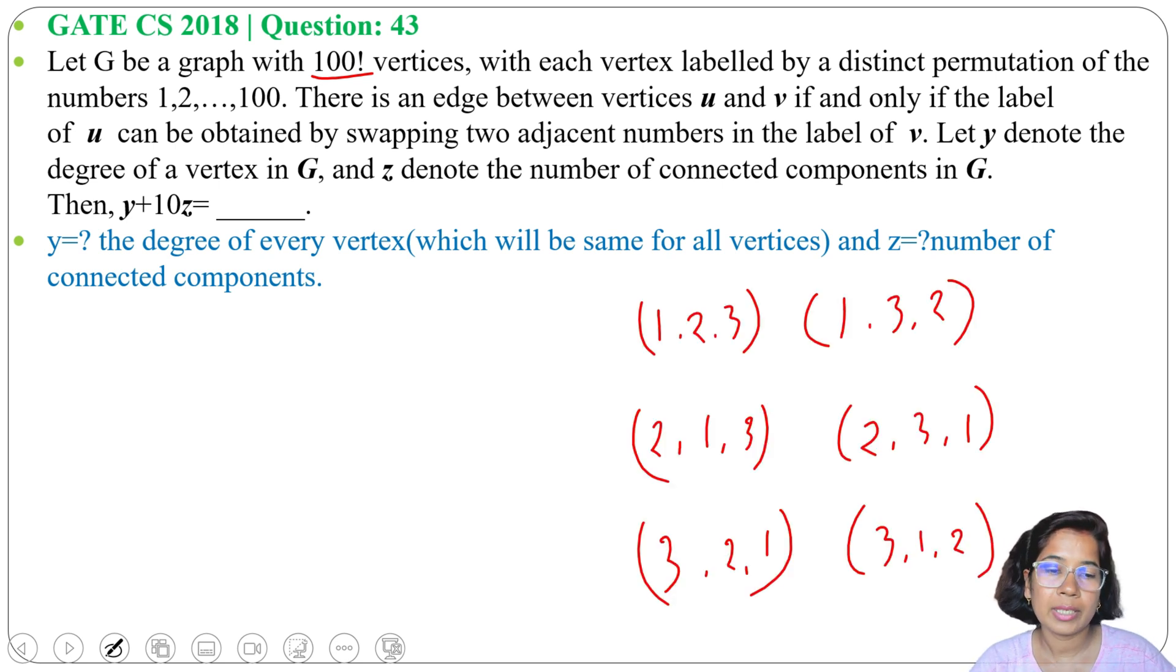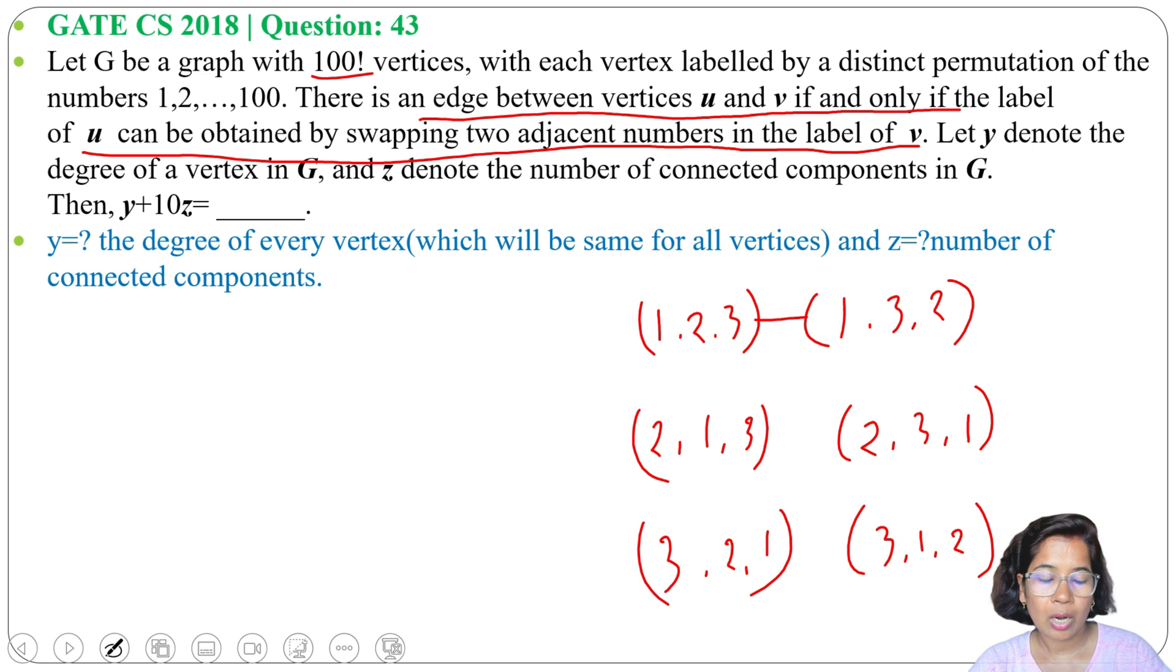Now check which vertices are adjacent. So (1,2,3) and (1,3,2) - these two are adjacent as by swapping 2,3 we are getting 3,2, right? So there is an edge between vertices u and v if and only if the label of u can be obtained by swapping two adjacent numbers in the label of v. So now (1,2,3) is adjacent to (2,1,3) as by swapping 1,2 we are getting (2,1,3).